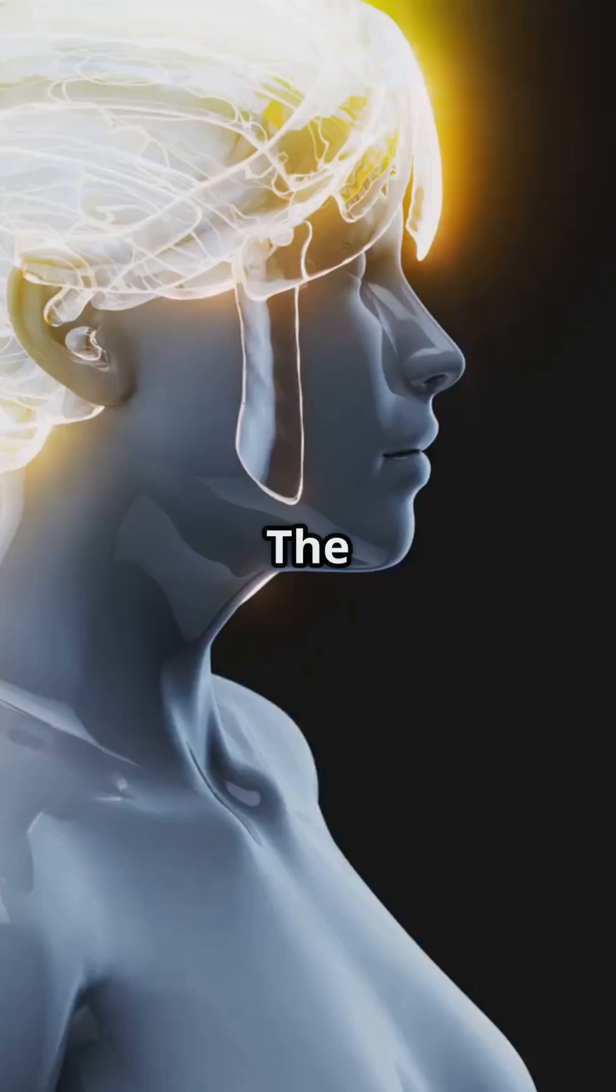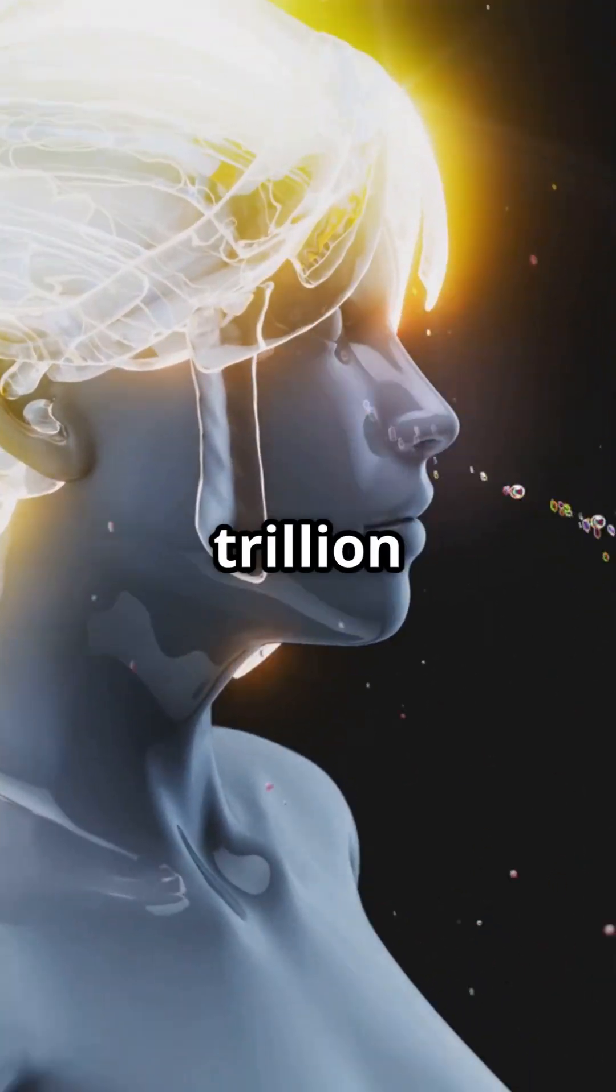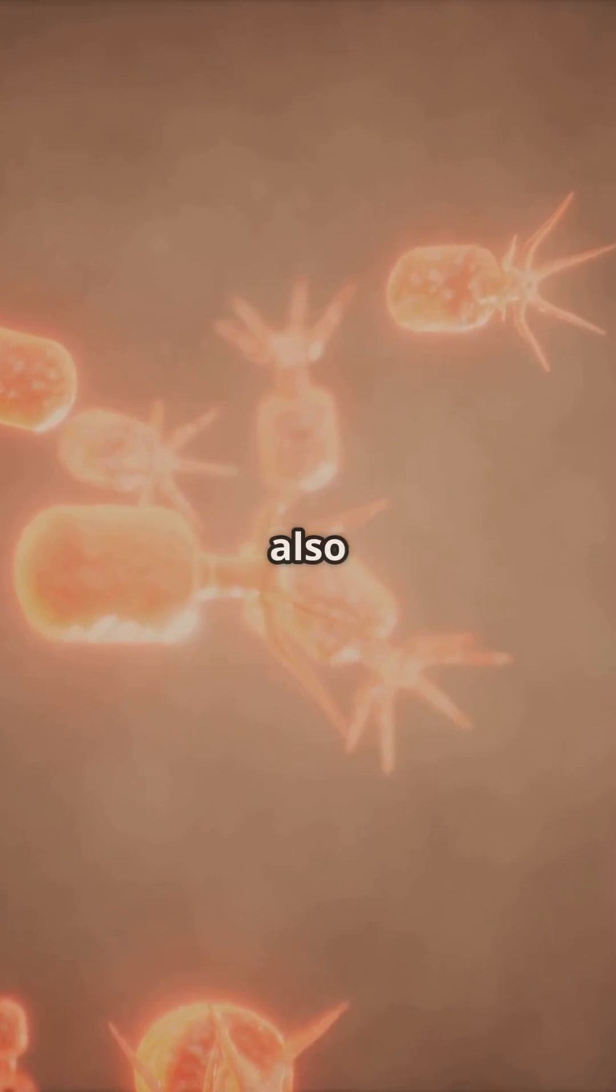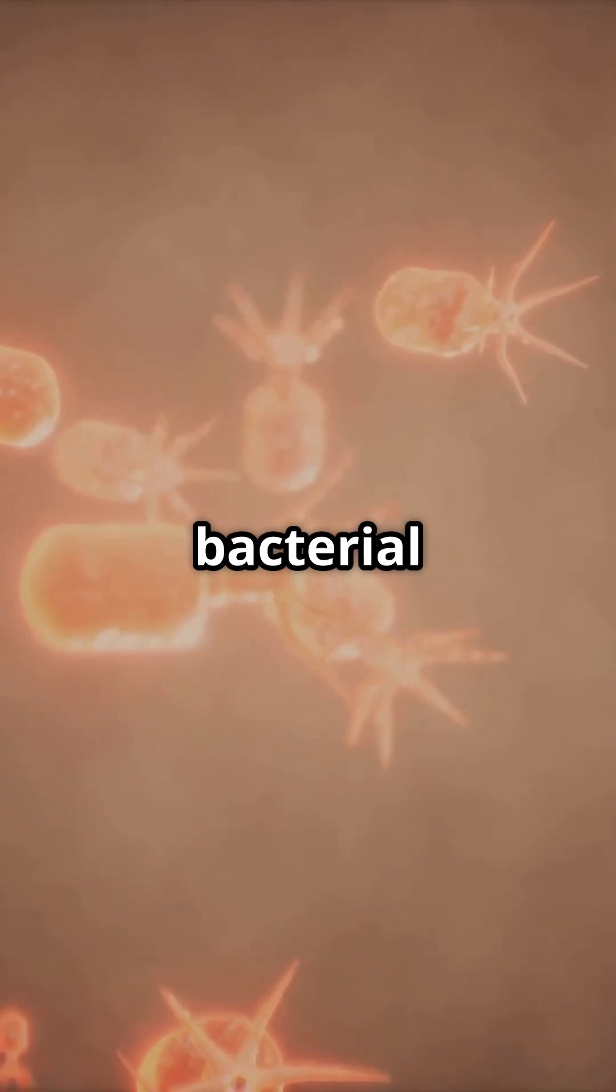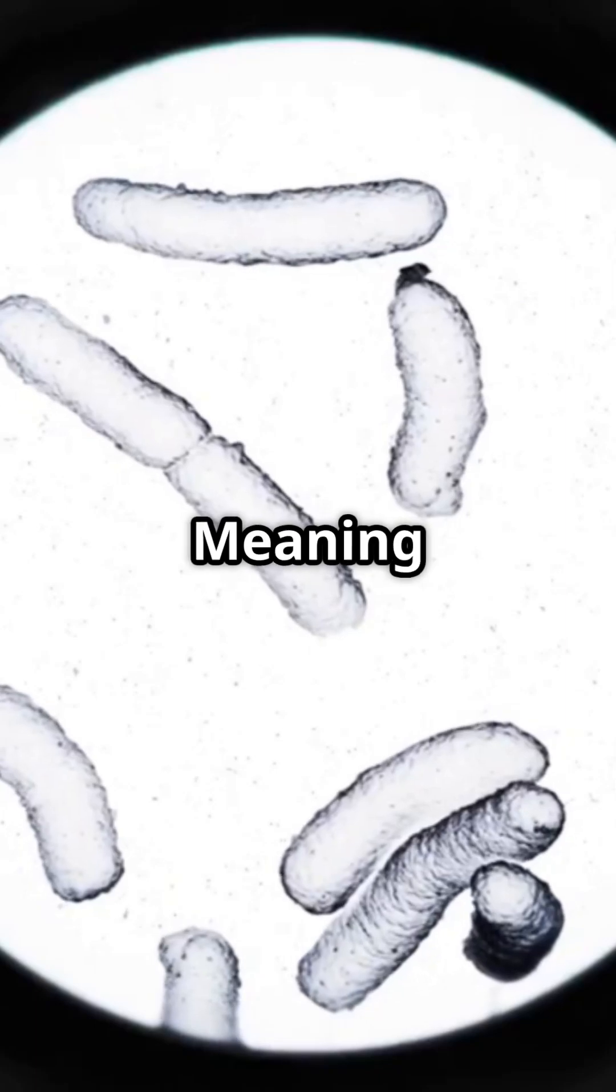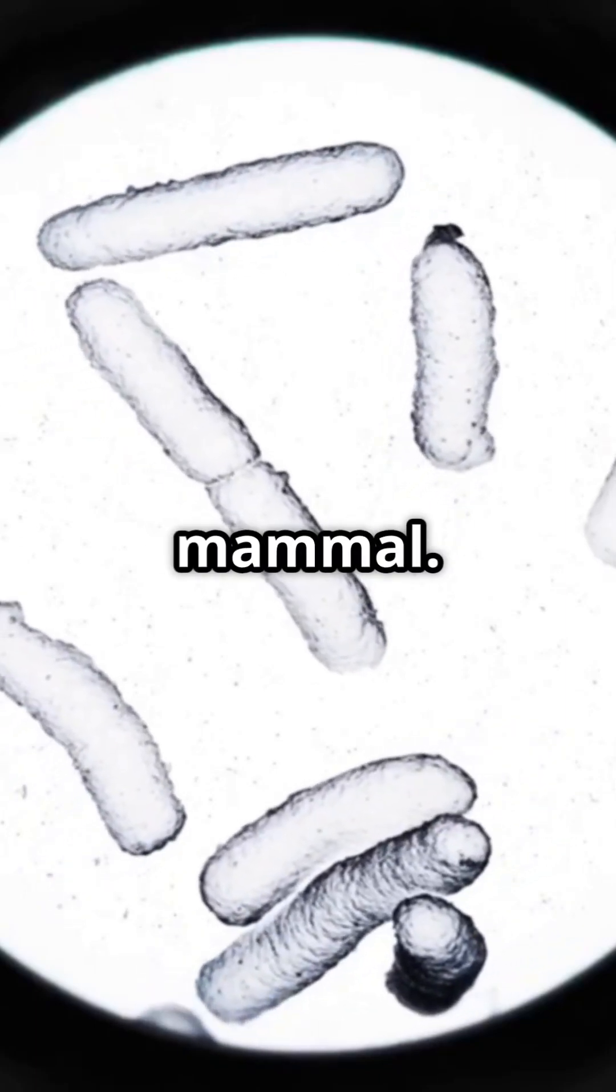Okay, let's break it down. The average human body has around 30 trillion human cells. Impressive, right? But wait for it. You've also got about 39 trillion bacterial cells living in and on you. Yep, that's 9 trillion more bacteria than you. Meaning you're technically more microbe than mammal.